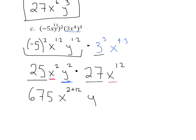And then I still have this y squared. Nothing else to put that together with. So that's just going to come down as y squared. Finally, I'm going to evaluate this. And our final answer is going to be 675 x to the 14th y to the 2nd.